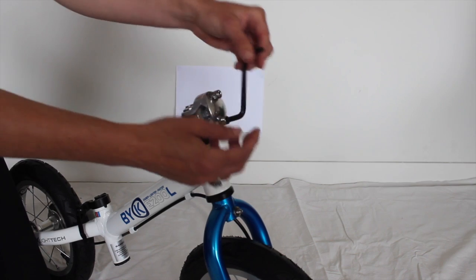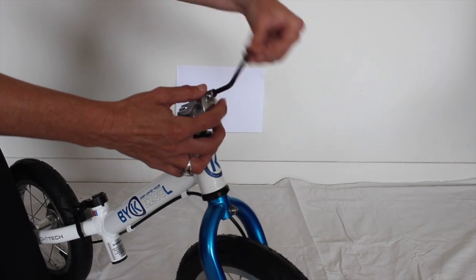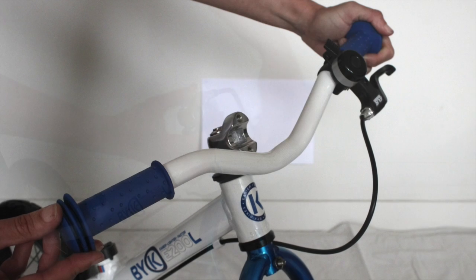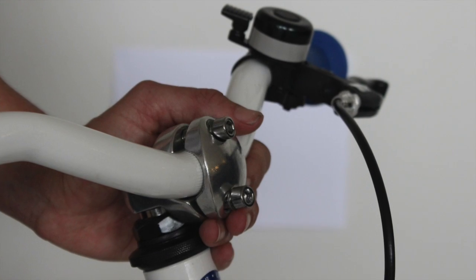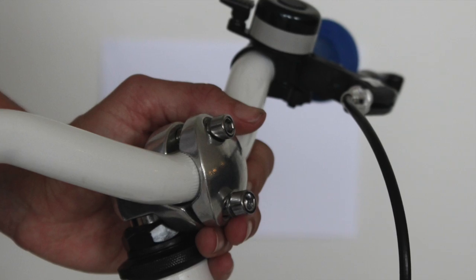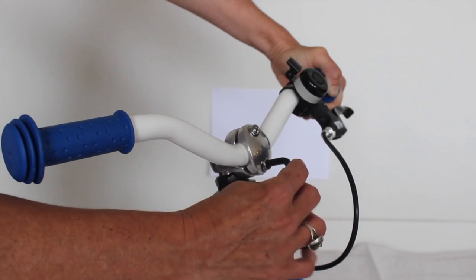To attach the handlebars, you need to remove the front part of the clamp. Place the handlebars, then put the clamp back on. Make sure the handlebars are around the right way with the brake lever on your left.